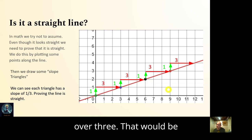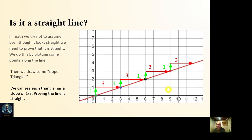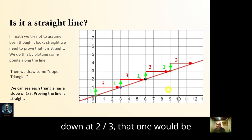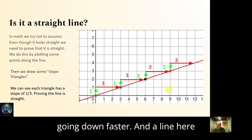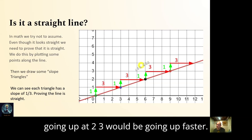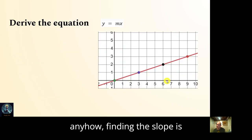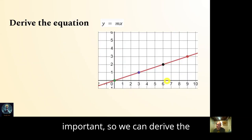That would be the same relative slope, but if I compared it to a slope going down at two over three, that one would be going down faster. A line going up at two over three would be going up faster. So the numbers are important, and finding the slope is essential to derive the equation y equals mx plus b.